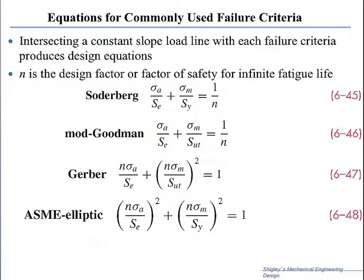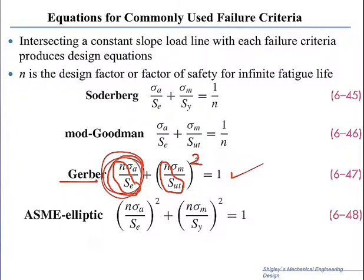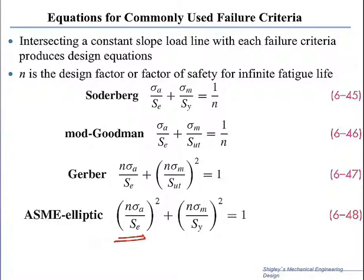The next one is the Gerber criterion. Gerber adds the component of the alternating damage with the degraded value of SE to the component of the mean damage with the degraded value of S ultimate, but it uses the square to reduce the effect of the mean. In other words, Gerber gives more credence to the alternating stress in determining final failure. The ASME elliptic equation is similarly called elliptic because the damage is not linearly added but added with the square, giving you an equation for an ellipse when you plot the relationship between sigma alternating and sigma mean.